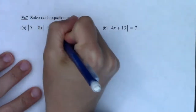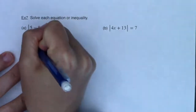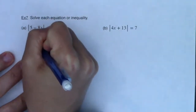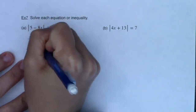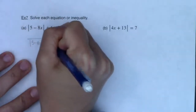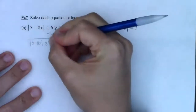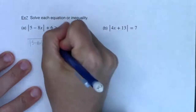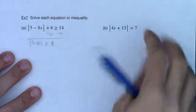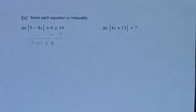Let me subtract the 6 here, and we will get |5 minus 8x| greater than or equal to 8 — since 14 minus 6 is 8. And the other one is already isolated, so we're good to go there.